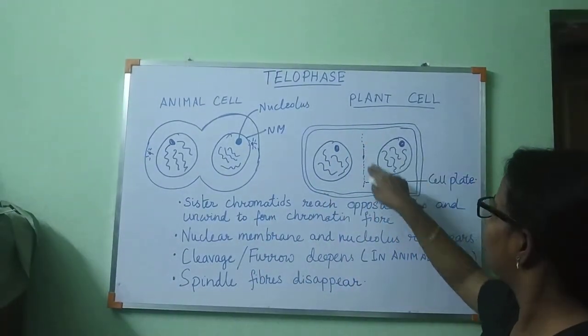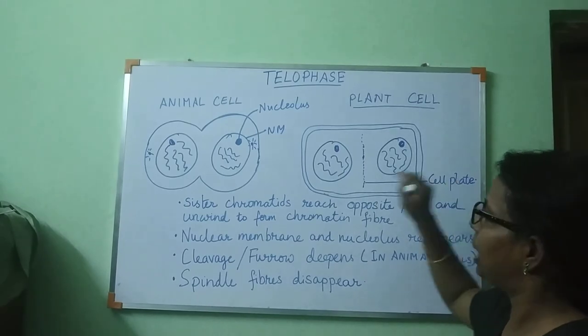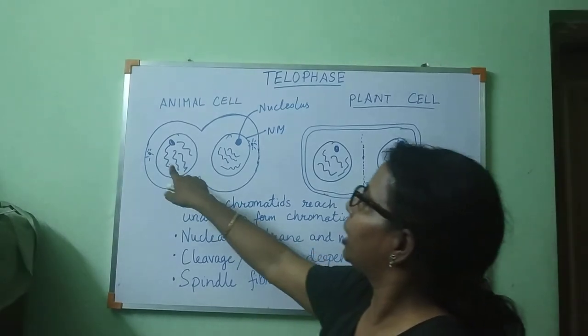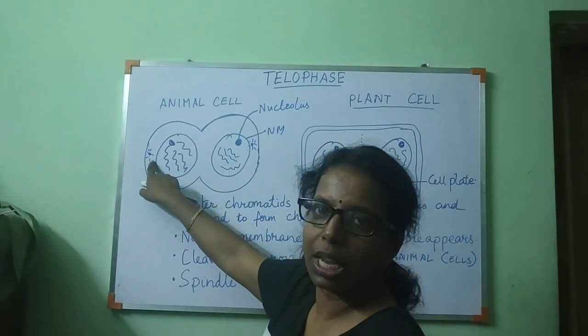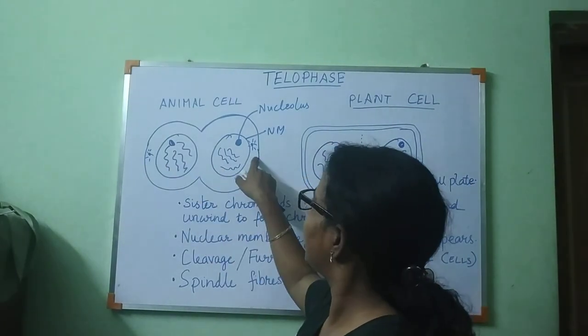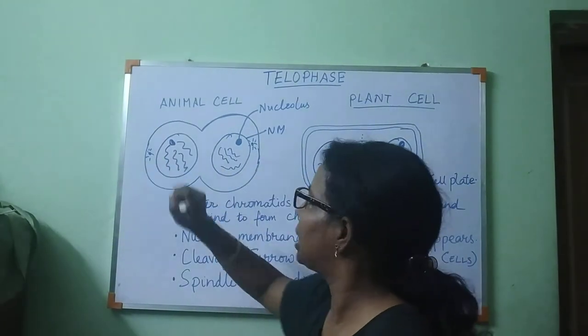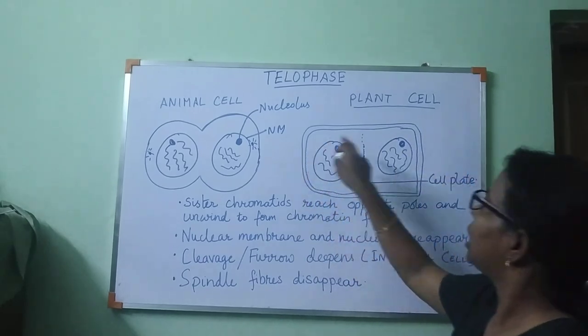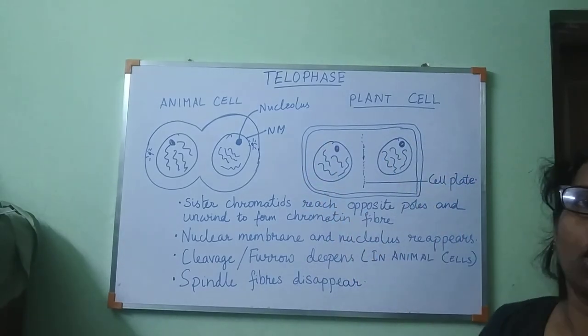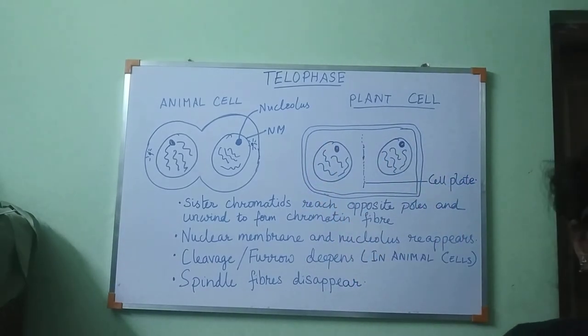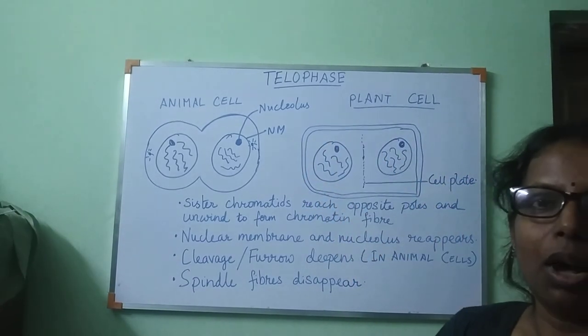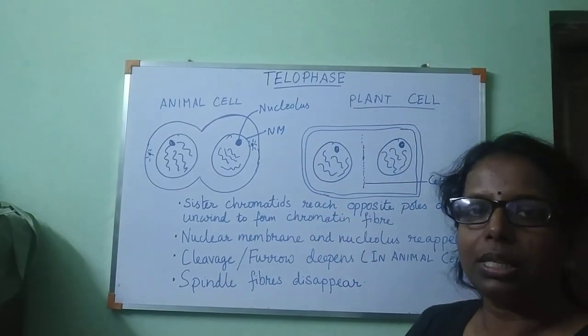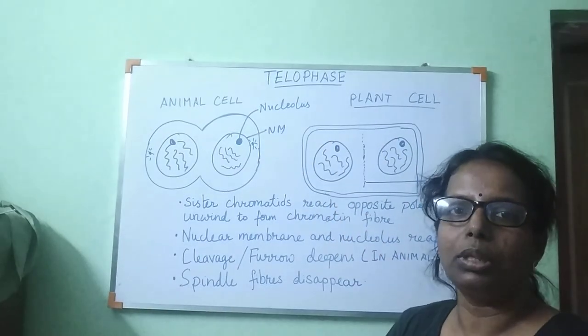Don't forget to draw the cell plate in case of a plant cell, and don't forget to draw the centriole in case of an animal cell — no centriole is drawn in the case of a plant cell. That is all about telophase.